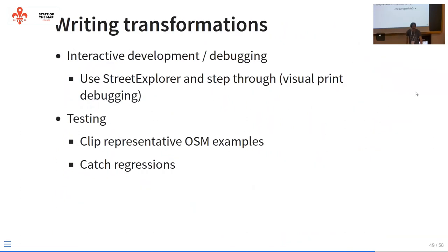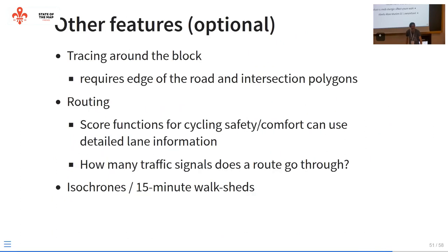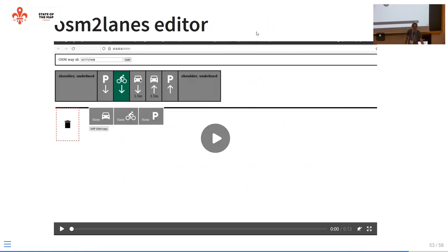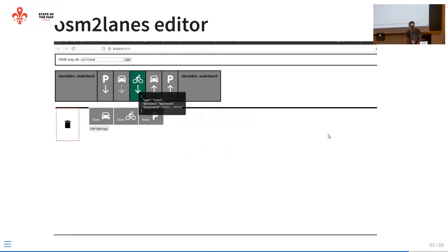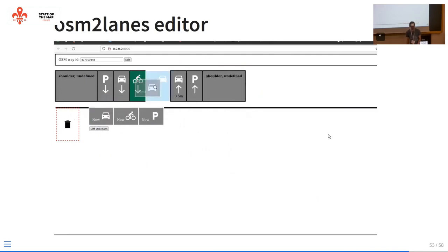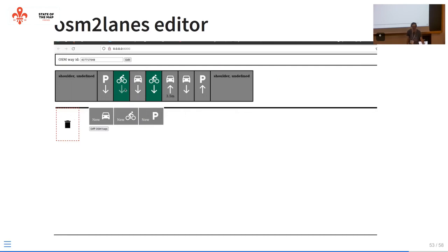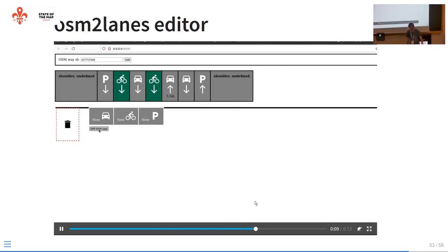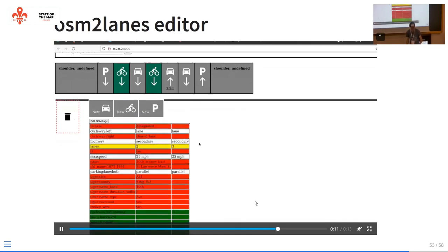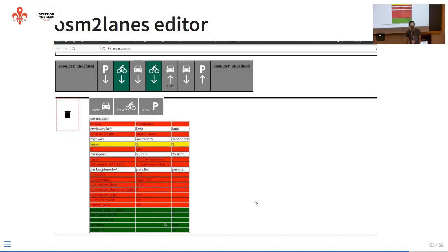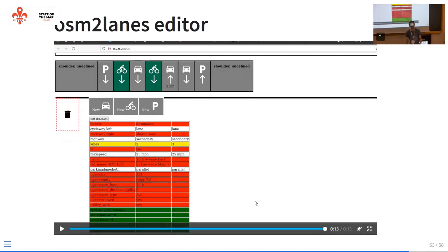Getting around to next steps: one thing I want is an easy way to edit a single road in OSM and get the tags out. This is the world's worst JavaScript demo — it produces the different lane tags at the end, and there are a million things wrong with it, but it's a start.